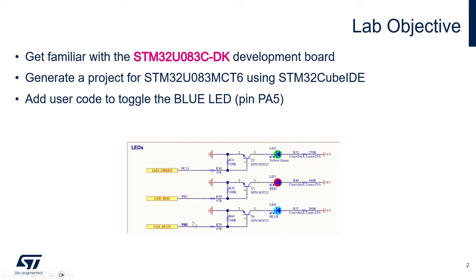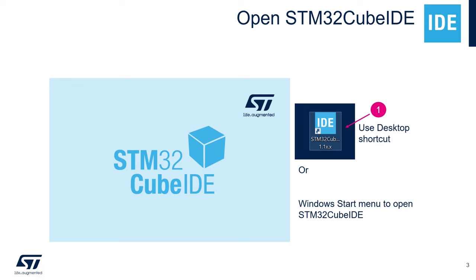In this lab we will configure PB5 as an output push-pull. This is the I/O connected to the blue LED, and we'll toggle it by writing zero and one to the register of this I/O in order to toggle the LED.